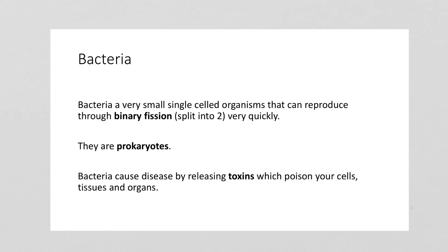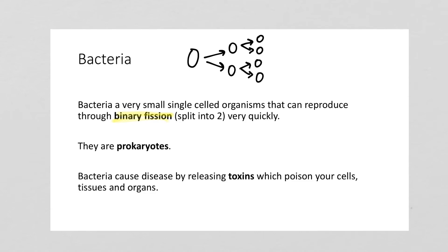Let's go through the four different types and how they cause disease. Bacteria are very, very small single-celled organisms that can reproduce really quickly — roughly every 20 minutes under ideal conditions. That process is called binary fission, where the bacteria splits into two. Once those bacteria grow, they can each split into another two, and all of those bacteria will be genetically identical. Bacteria are prokaryotes, a term from unit B1.